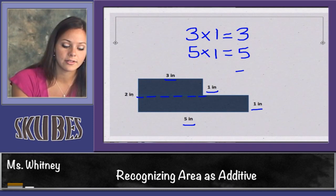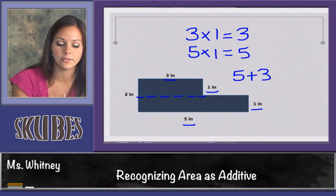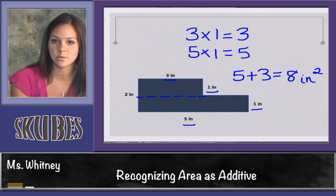If I add 5 plus 3, the area of each rectangle, I get a total of 8 square inches or inches squared.